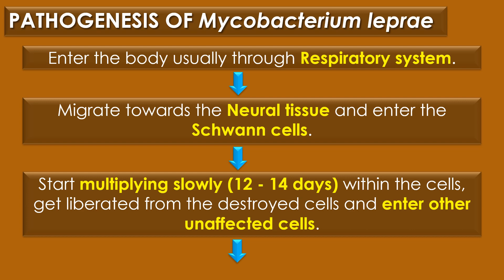After entering the body, Mycobacterium leprae migrates towards the neural tissues present in the peripheral nervous system and enters the Schwann cells. Bacteria can also be found in macrophages, muscle cells and endothelial cells of blood vessels. After entering into the Schwann cells or macrophages, Mycobacterium leprae starts to multiply slowly, taking about 12 to 14 days for one bacterium to divide into two within the cell.